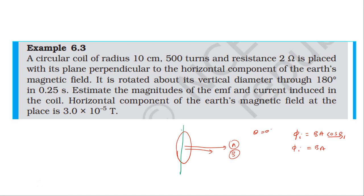If you rotate the coil, the area vector is in the opposite direction, then the field makes 180 degrees with the area. The final angle is 180 degrees. The final flux is B × A × cos(180°). Cos(180°) = −1, so the final flux is −B × A.